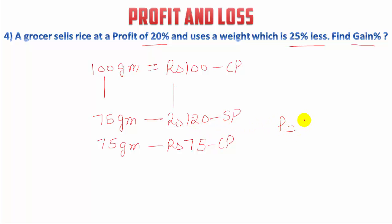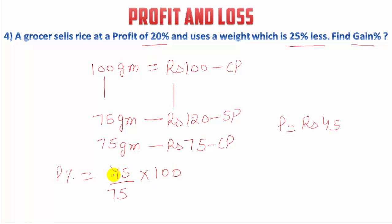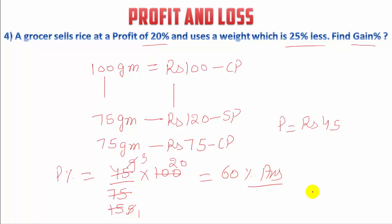He buys at Rs.75 and sells at Rs.120, so there is a profit of Rs.45 (120 − 75). Profit percentage = (45 / 75) × 100 = 60%. That is the answer.